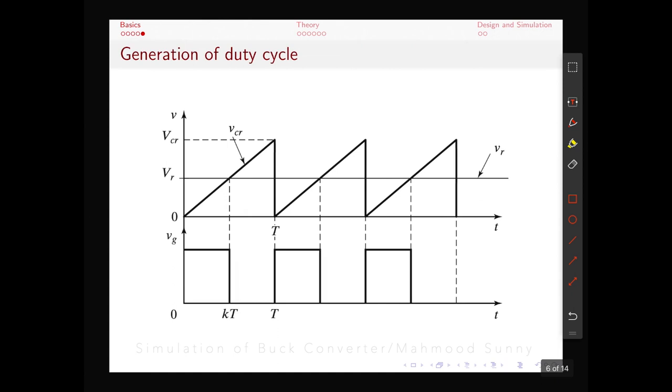We can see that whenever the reference voltage is greater than the carrier voltage, the comparator produces a positive output. And after this point the reference voltage is lesser than the carrier voltage. So the comparator produces zero voltage. This duty cycle can be supplied to the gate of a MOSFET for example to drive our buck converter.